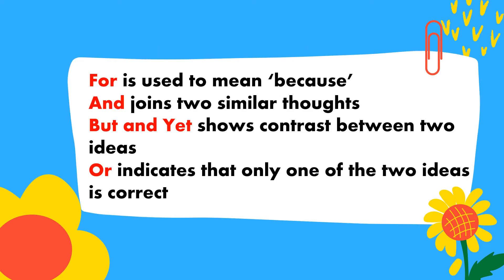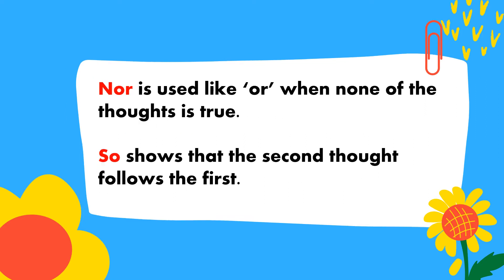FOR is used to mean 'because.' AND joins two similar thoughts. BUT and YET show contrast between two ideas. OR indicates that only one of the two ideas is correct. NOR is used like OR when none of the thoughts is true. And SO shows that the second thought follows the first.